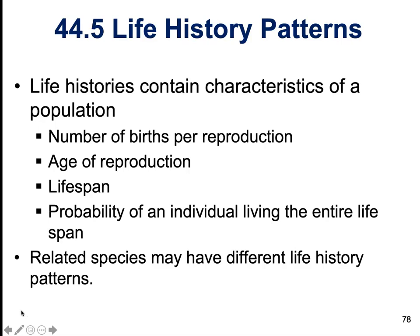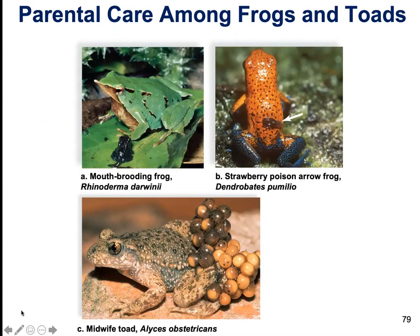Related species may have very different life history patterns. For example, toads and frogs have very different patterns in their behavior and how they care for their offspring.